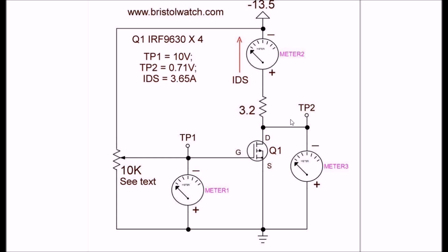At 10 volts test point two is reading 0.71 volts and 3.65 amps.